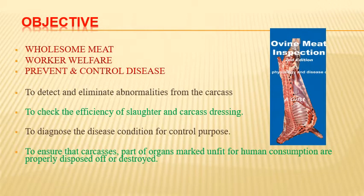Objectives of post-mortem inspection can be put into three aspects. One is wholesome meat, second is worker welfare, and third is preventing and controlling disease. Through post-mortem inspection, we can detect and eliminate abnormalities from the carcass. Any carcass showing abnormality or symptoms of disease should be eliminated to ensure the supply of wholesome, disease-free meat for human consumption and to safeguard human health.